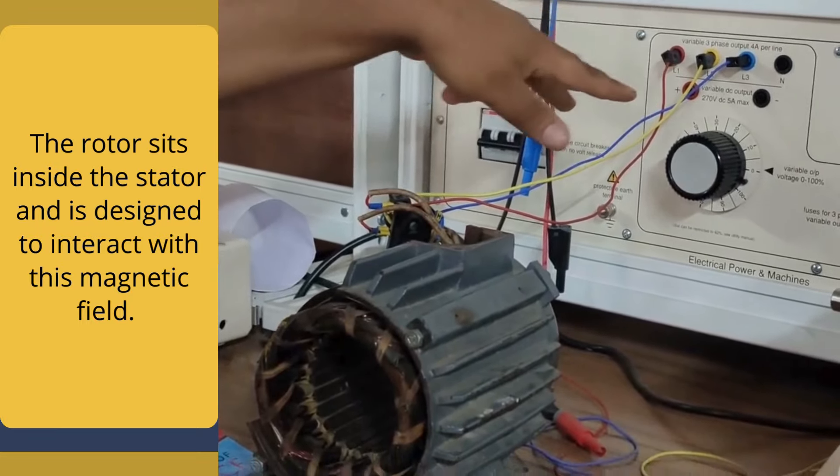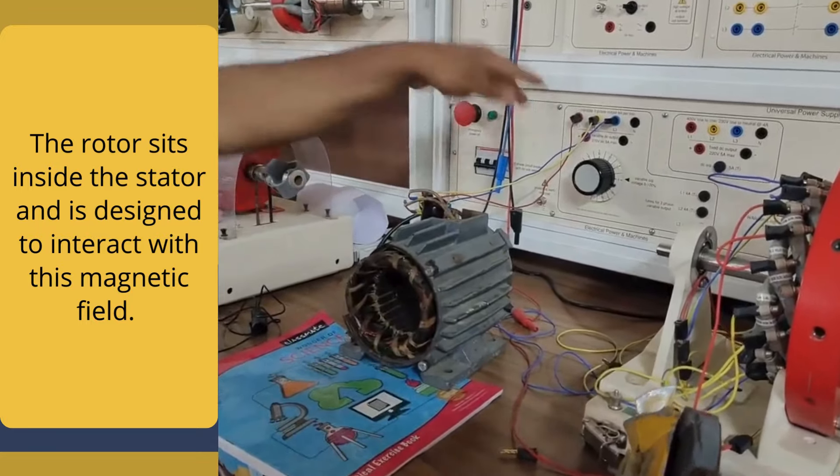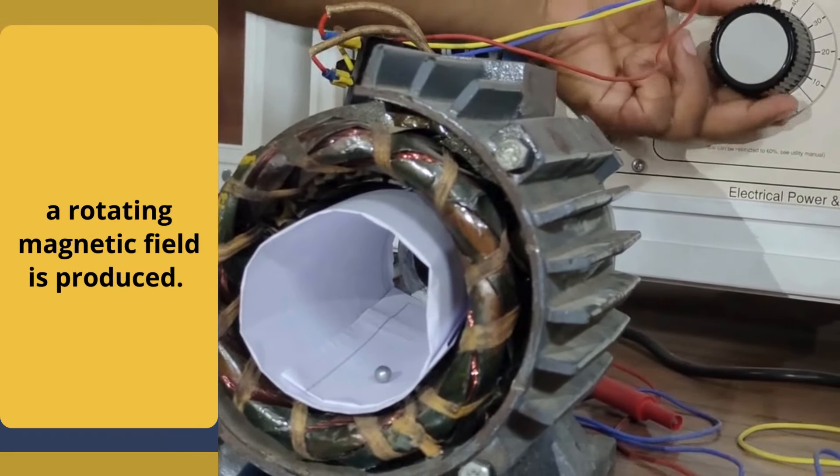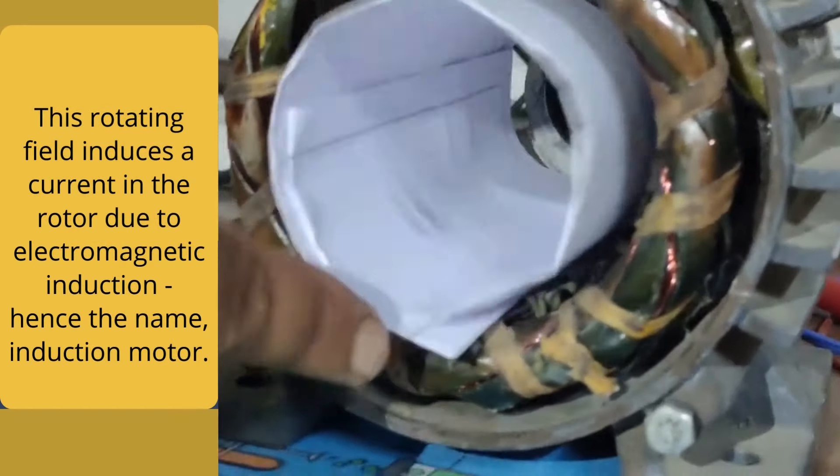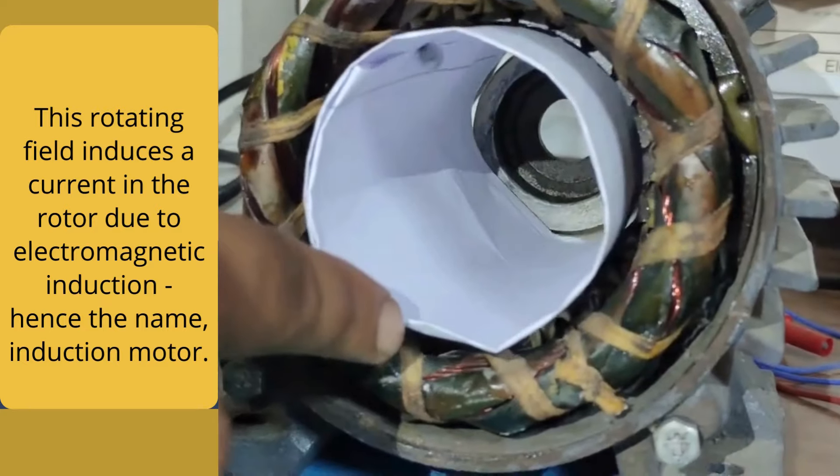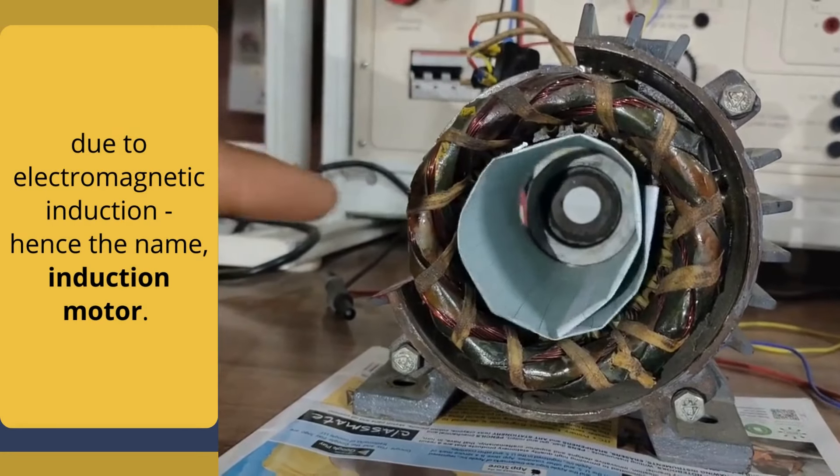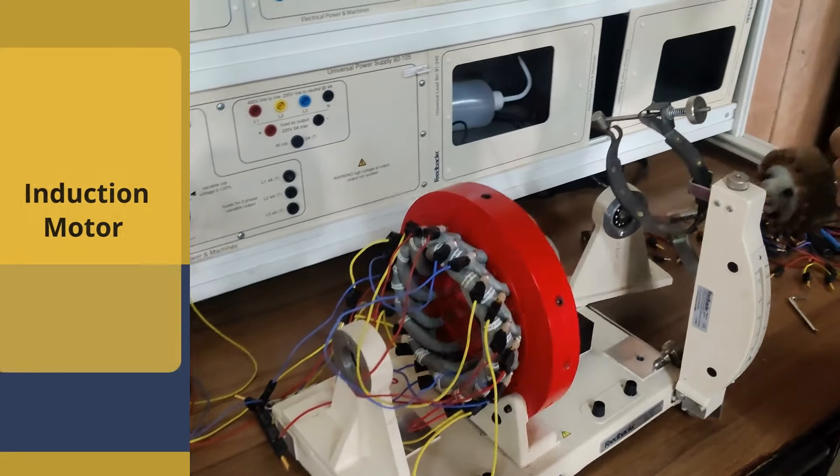Here is why it gets interesting. When you supply AC current to the stator winding, a rotating magnetic field is produced. This rotating magnetic field induces a current in the rotor due to electromagnetic induction, hence the name induction motor.